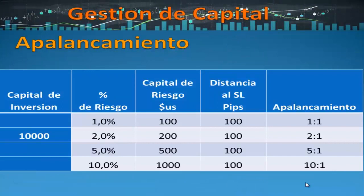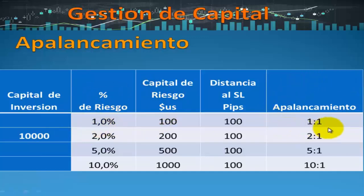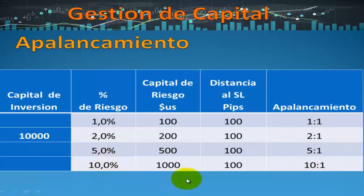Veamos el tema del apalancamiento con más detalle. Si tuviéramos 10.000 dólares y nuestra distancia de stop loss fuera constante de 100 pips: si queremos arriesgar el 1%, el capital arriesgado sería 100 dólares y el apalancamiento sería 1 a 1. Si deseamos arriesgar 2%, el capital que podríamos perder sería 200 y el apalancamiento sería 2 a 1. Si arriesgamos el 5%, estamos arriesgando 500 dólares y el apalancamiento sería 5 a 1. Si arriesgamos el 10%, el capital arriesgado es 1.000 dólares y el apalancamiento es 10 a 1.